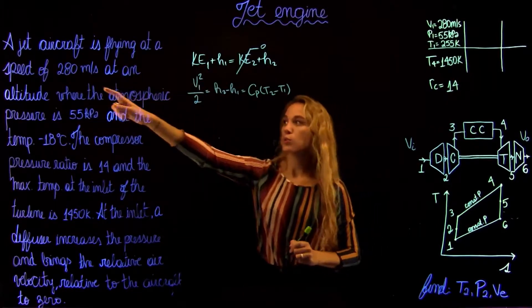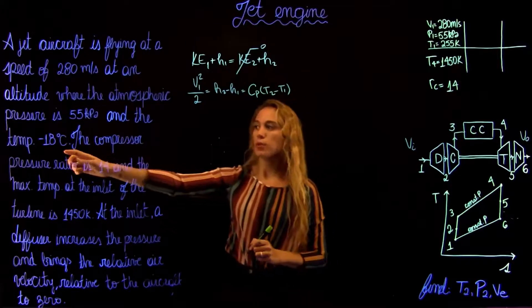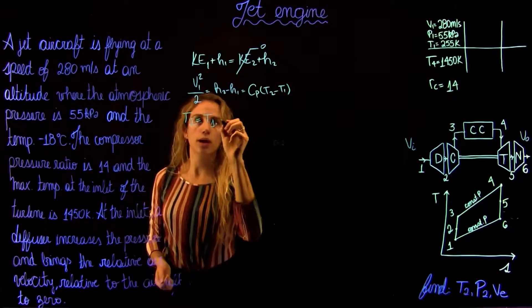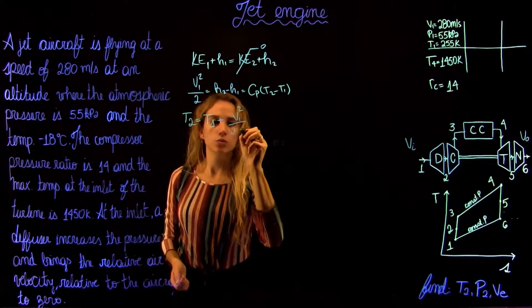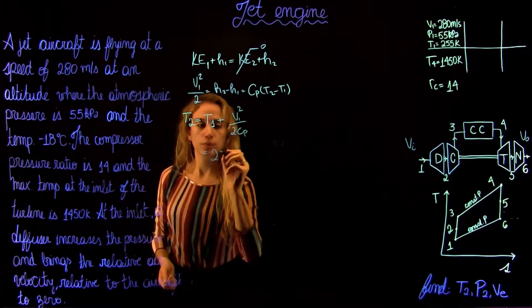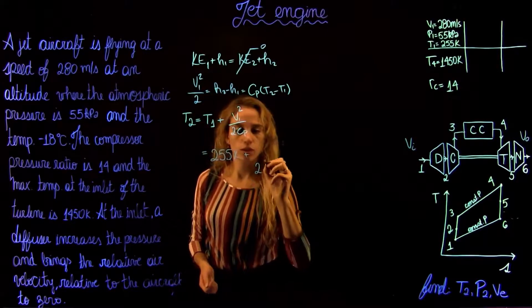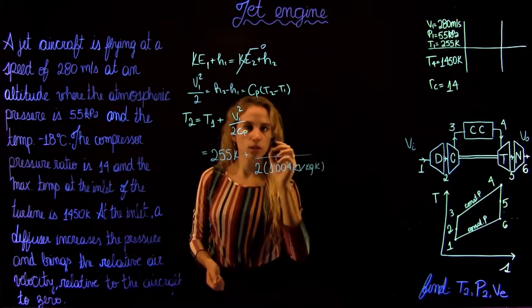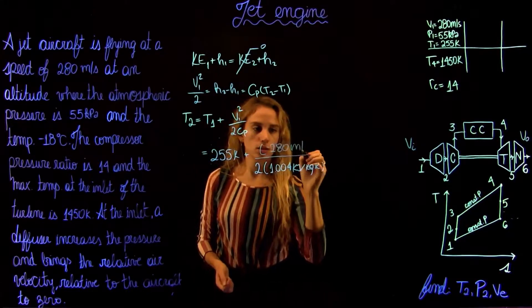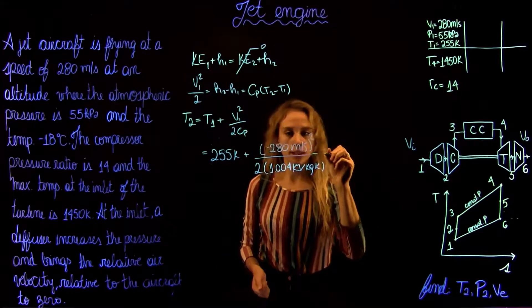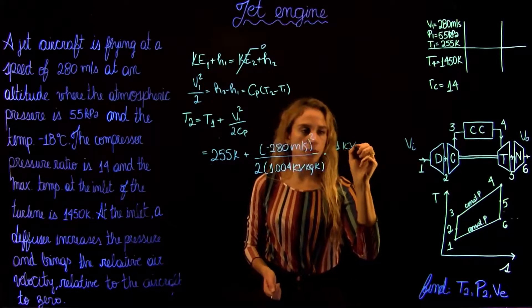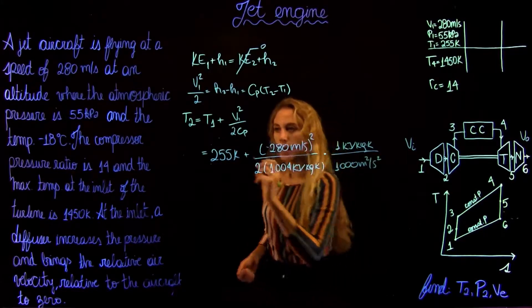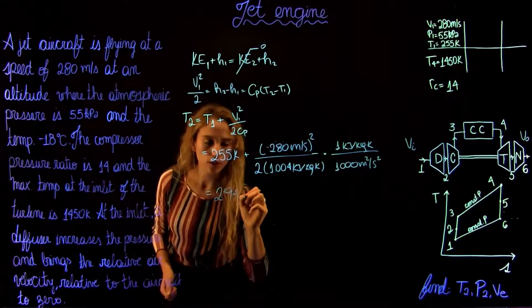This gives us V1²/2 = Cp(T2 − T1). V1 is 280 m/s, Cp is known, and T1 is 255 kelvins. Solving for T2: T2 = T1 + V1²/(2Cp) = 255 K + (280²)/(2 × 1.004 kJ/kg·K) × (1 kJ/kg / 1000 m²/s²), giving a temperature at state 2 of 294.04 kelvins.